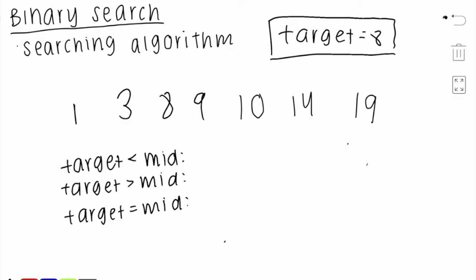So let's say we have the sorted array 1, 3, 8, 9, 10, 14, and 19. Binary search is an efficient way to tell if a certain number is in this array. For example, let's say I was searching for the value 8. I want to see if 8 exists in this array. So let's go over how binary search works.